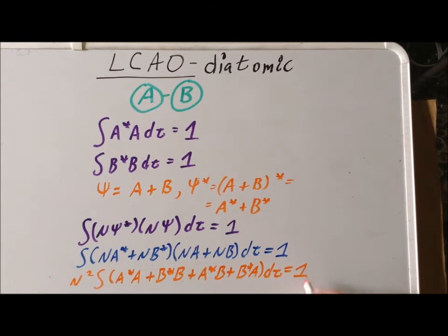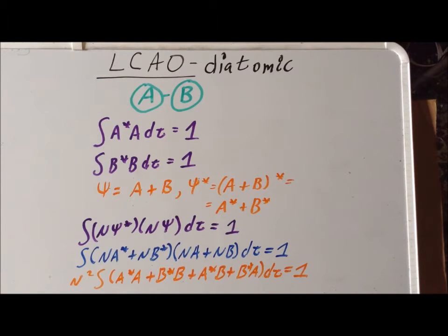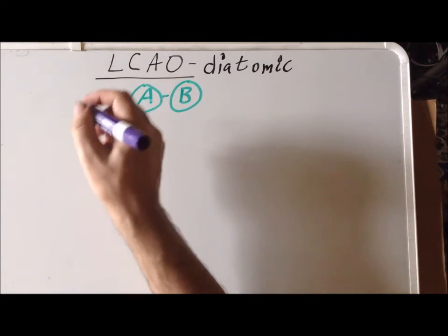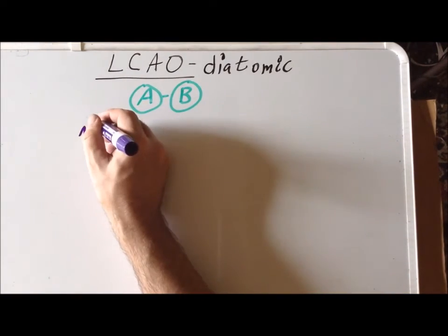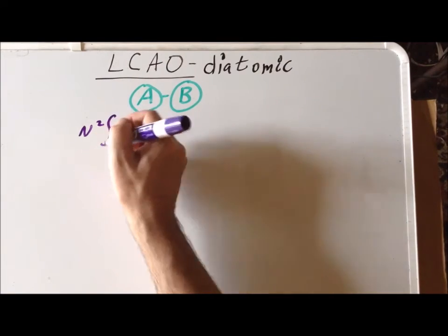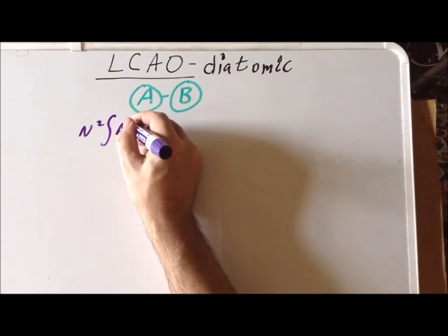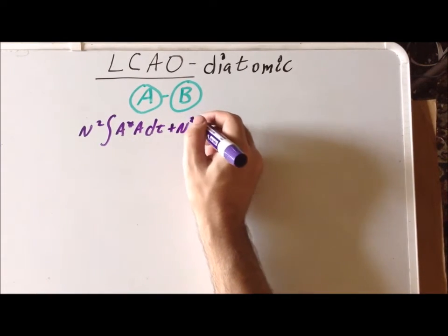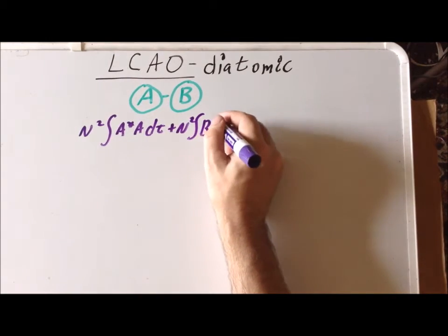All we've done here is use the FOIL method and factored out the resulting N² that arrives in each of the particular terms. Next, we can use the fact that the integral is a linear operator so that we can get a series of integrals. So we have N² times the integral of A*A dτ plus N² times the integral of B*B dτ...